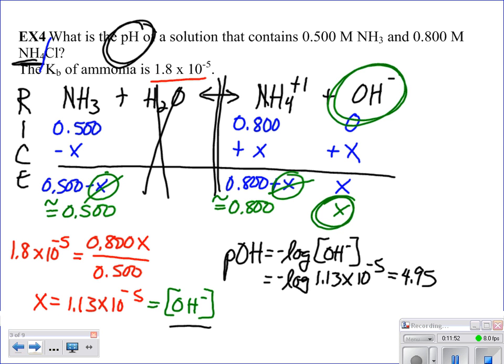That's not my answer. Now what I have to do is I have to say the pH equals 14 minus my pOH, which equals 9.05. There we go.